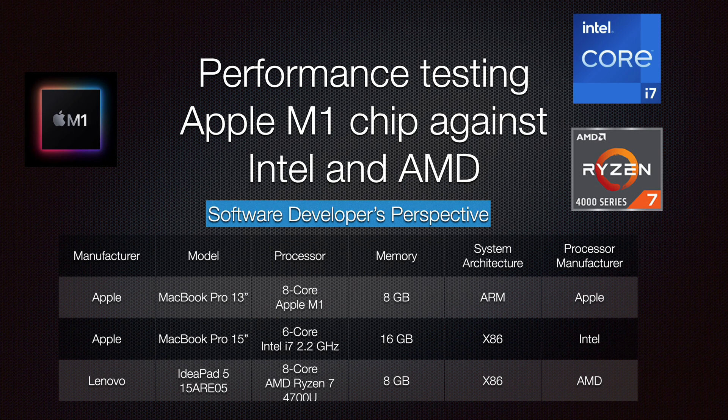The third laptop has an 8-core AMD Ryzen 7 4700U with 8GB RAM. The major difference here is that the Apple M1 architecture is ARM-based — the chip architecture mostly used in phones, tablets, and small gadgets — compared to the other two laptops, which are x86-based. x86 is proven technology for laptops, desktops, and servers.